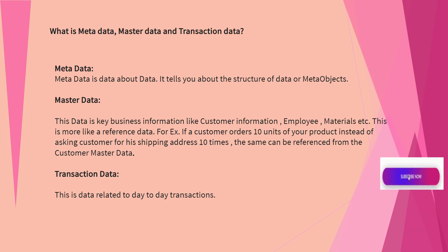What is metadata, master data, and transaction data? Metadata is data about data — it tells you about the structure of data or meta-objects. Master data is key business information like customer information, employee, materials, etc. — it is more like reference data. For example, if a customer orders 10 units of your product, instead of asking for the shipping address 10 times, the same can be referenced from the customer master data. Transaction data is data related to day-to-day transactions.